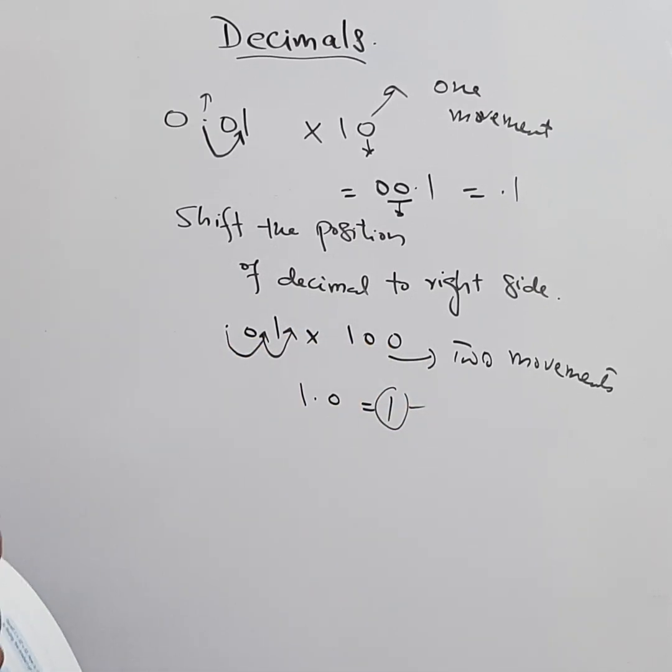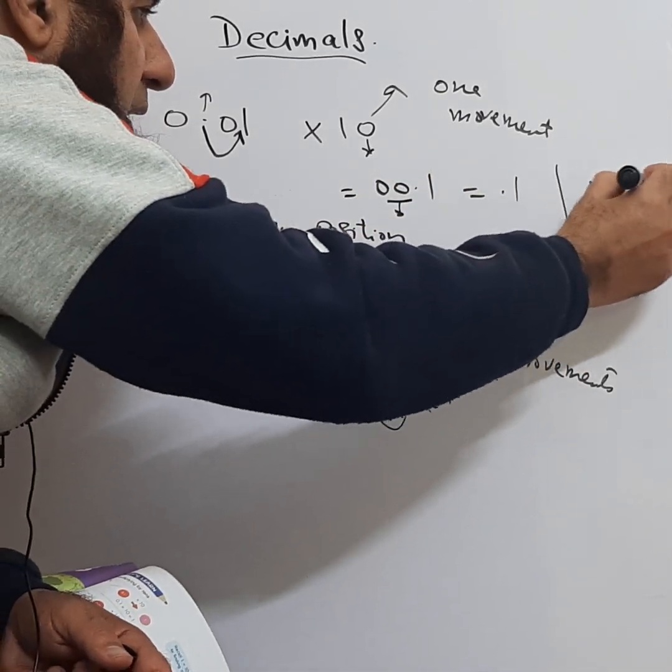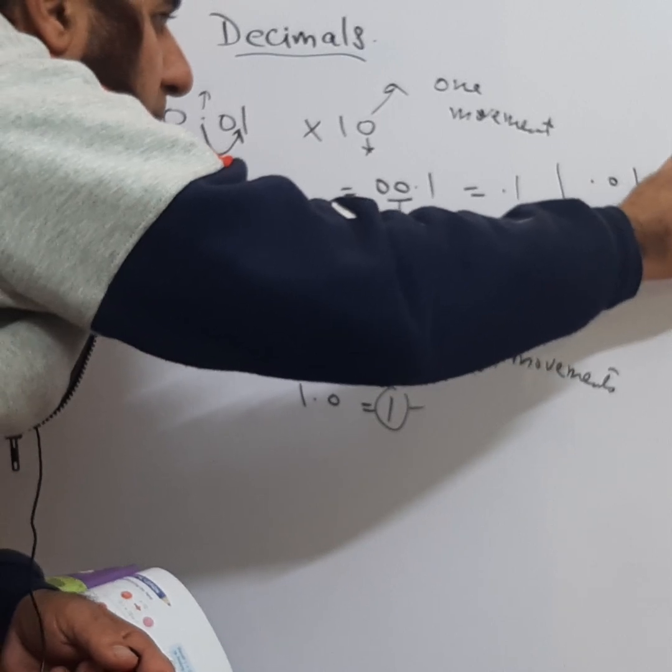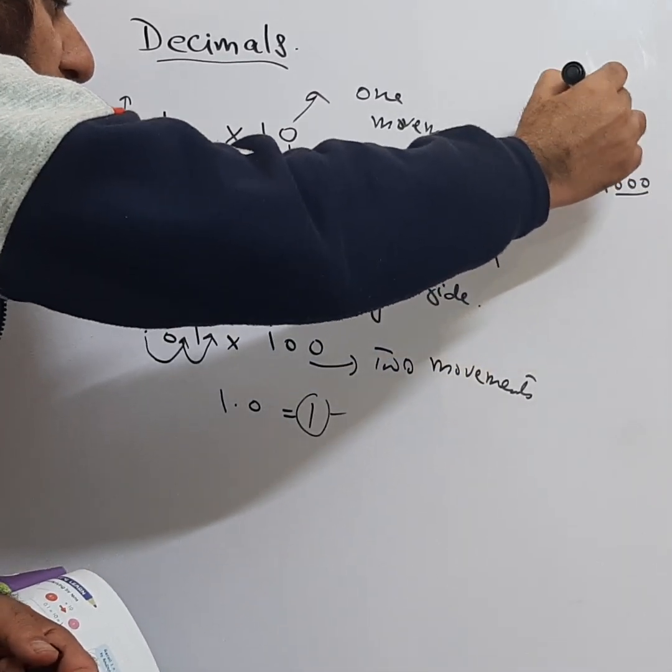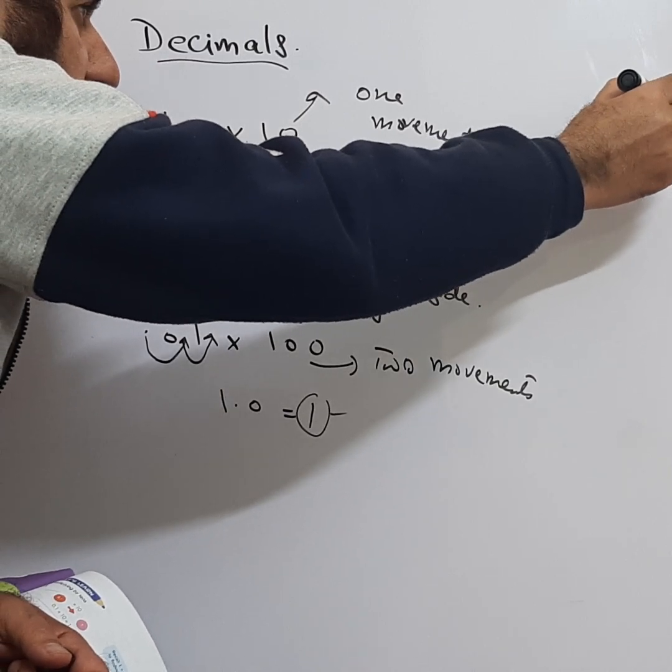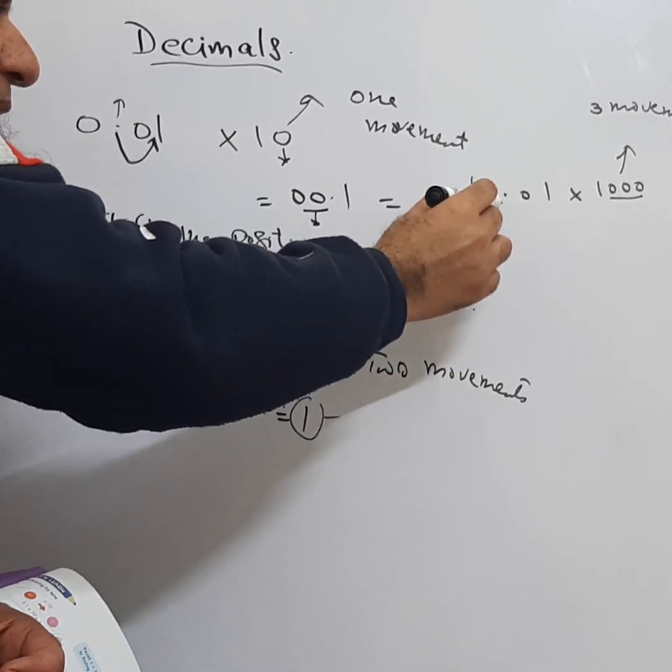Similarly, if we have the same 0.01 and we need to multiply it by 1000, we have three zeros. Three zeros means we need to give three movements or three jumps to the decimal on the right side.